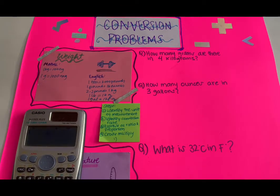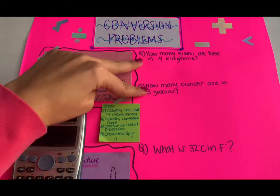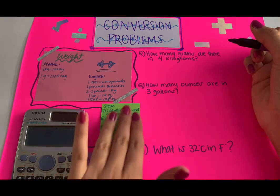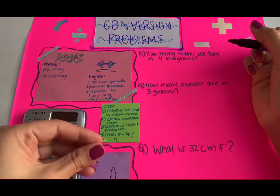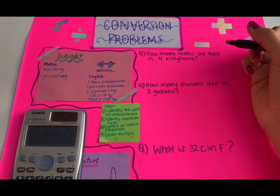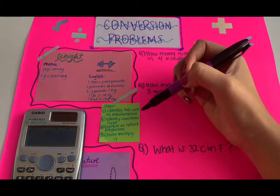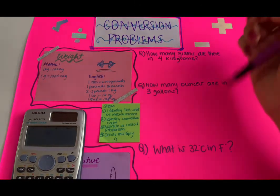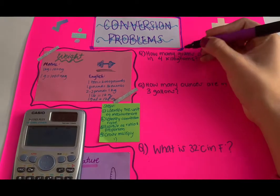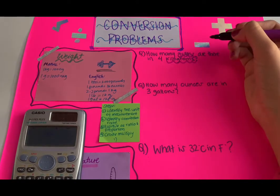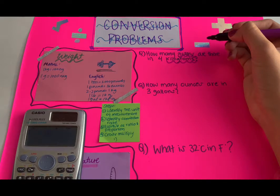Let's start off with weight. I have used two questions for each unit of measurement, so for weight we have two questions. The first one says: how many grams are there in 40 kilograms? This sticky note shows the steps we have to follow. The first step is to identify the unit of measurement in the problem — in this question, the units are grams and kilograms.